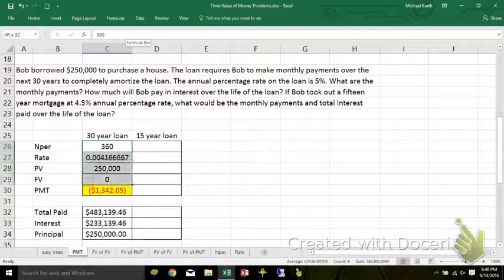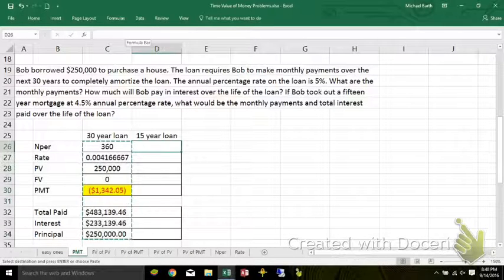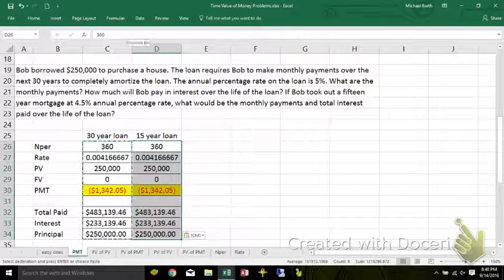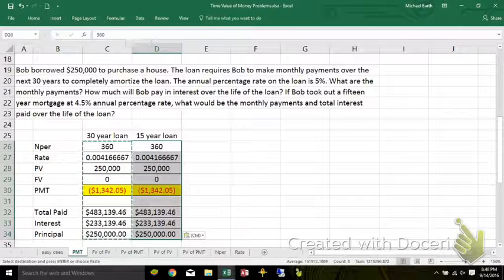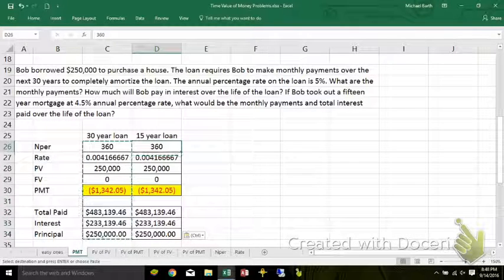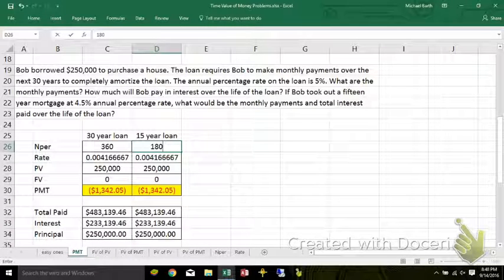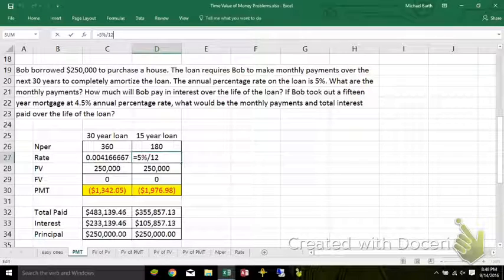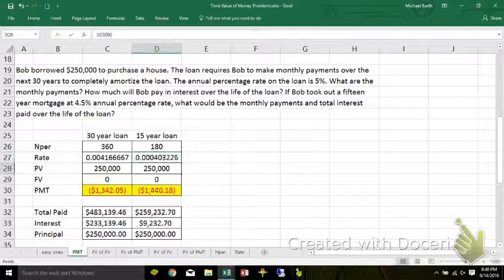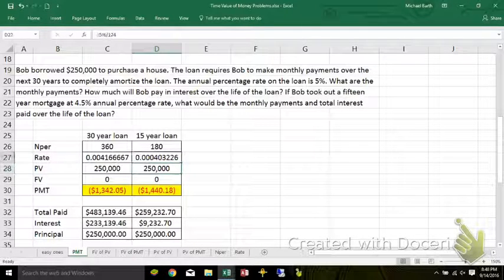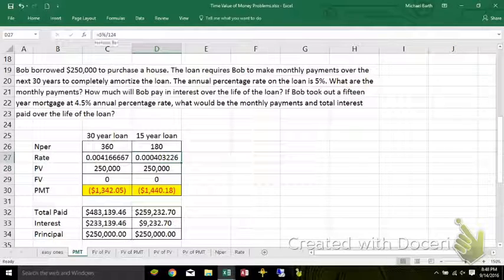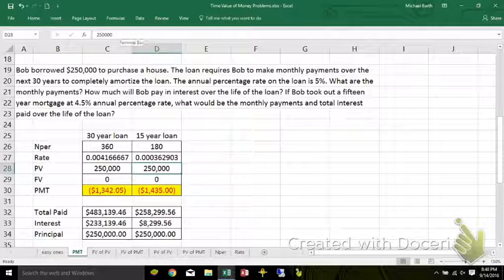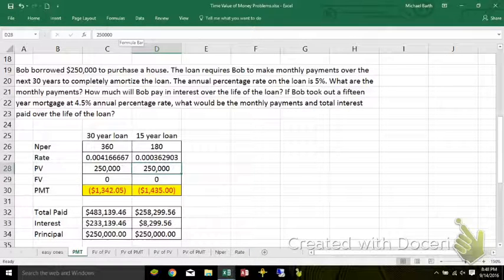All right. Well, I can copy all of this over to the next set of cells here, because what I'm looking for, if you took out a 15-year mortgage at 4.5%, there'd be 180 payments in 15 years. And the 4.5%, same $250,000. Notice that the payment is higher.